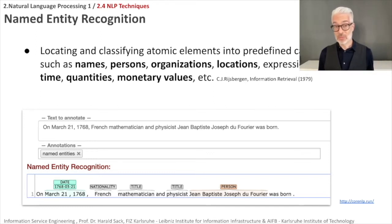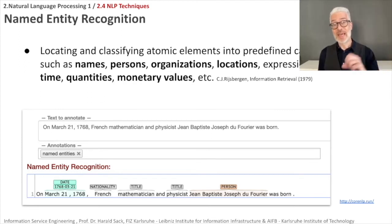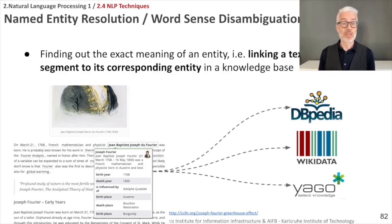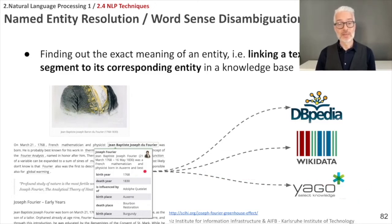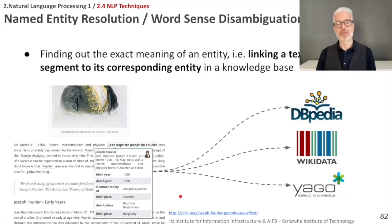Once the category of a word is determined, you might want to connect it to a specific entity in a knowledge base or Wikipedia. This is referred to as named entity resolution or word sense disambiguation — especially when things are ambiguous, you want to find out which entity is being referred to. For example, if there are several people named Fourier, you want to know which Fourier is meant. Here is an example of an entity linking system applied to the SciHi blog, which we will refer to frequently in this lecture as a showcase for NLP technology.